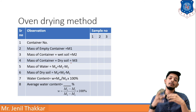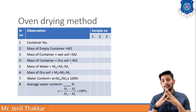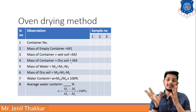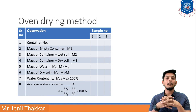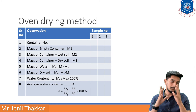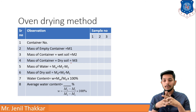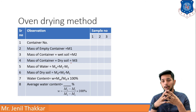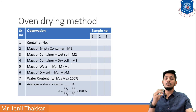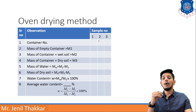For average water content, the formula is W equals (M2 minus M1) divided by (M3 minus M1), times 100. With values of M1, M2, and M3 recorded, you can fill all the blocks in the observation table for each sample.